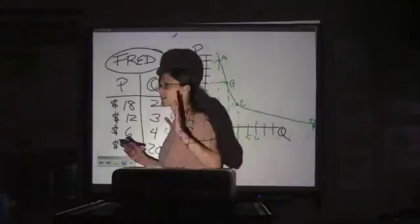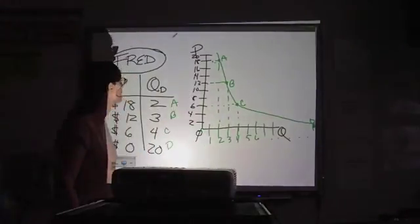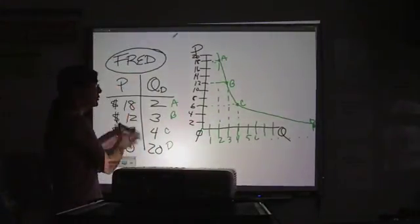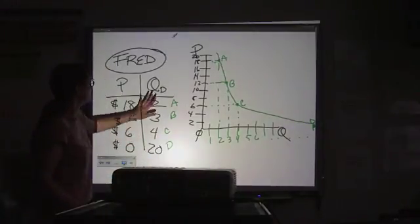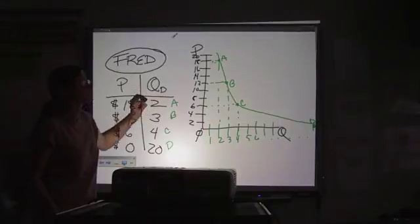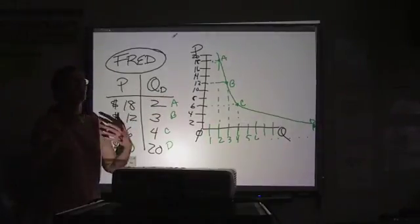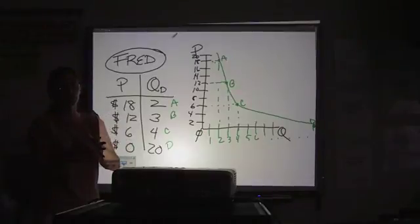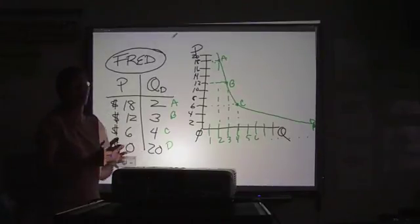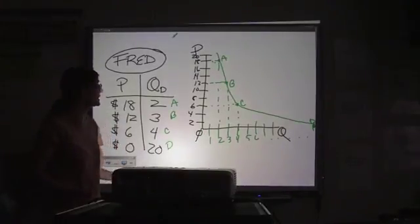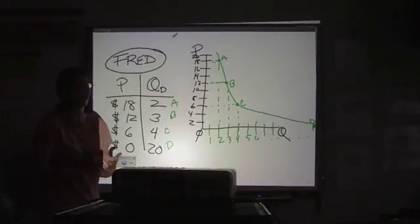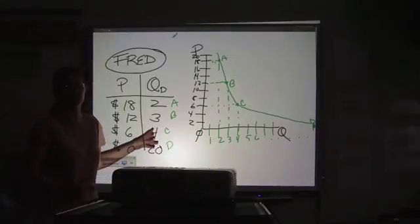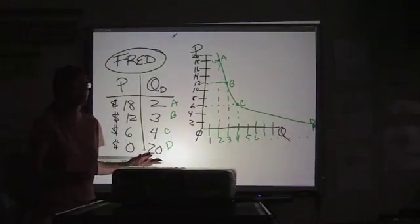What is represented on this curve is Fred's preferences for something that he buys. In this case, paperback books. The quantity demanded represents his ability to purchase, his willingness and ability to purchase. If you're not willing and able to buy something, you don't demand it. You might be willing to buy a private jet. If you don't have the money, you're not part of that market.